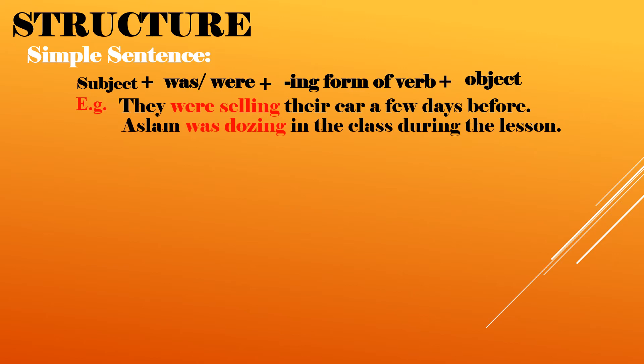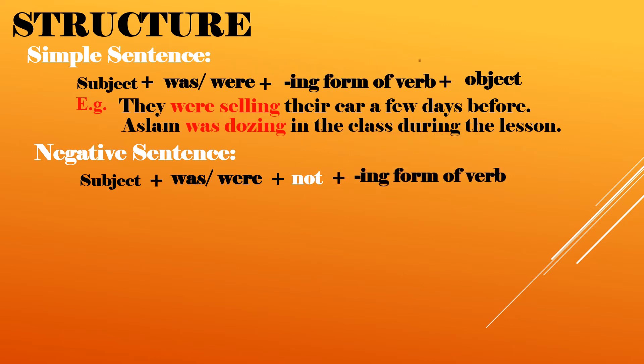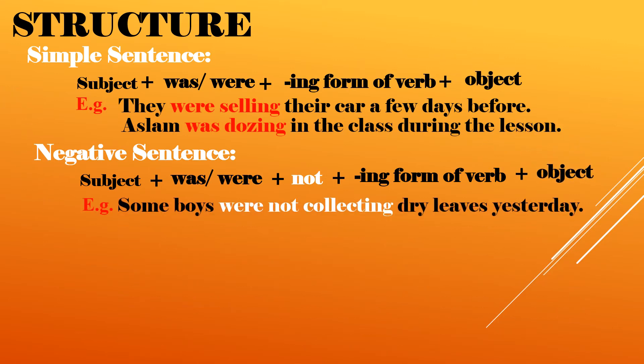Negative sentence: subject plus was or were, and then right after was or were we place not, the same -ing form of a verb is used in negative sentences also, and then object in the end. Example: some boys were not collecting dry leaves. Now you see, some boys is the subject, were, and then right after the helping verb were we have placed not, and then -ing form of a verb.